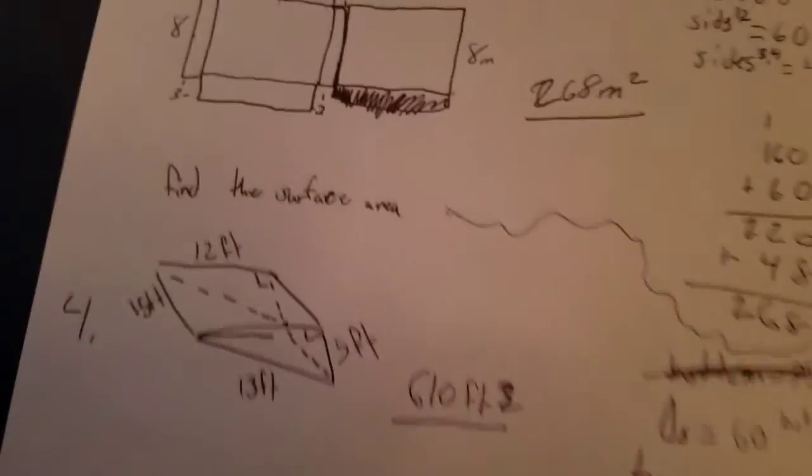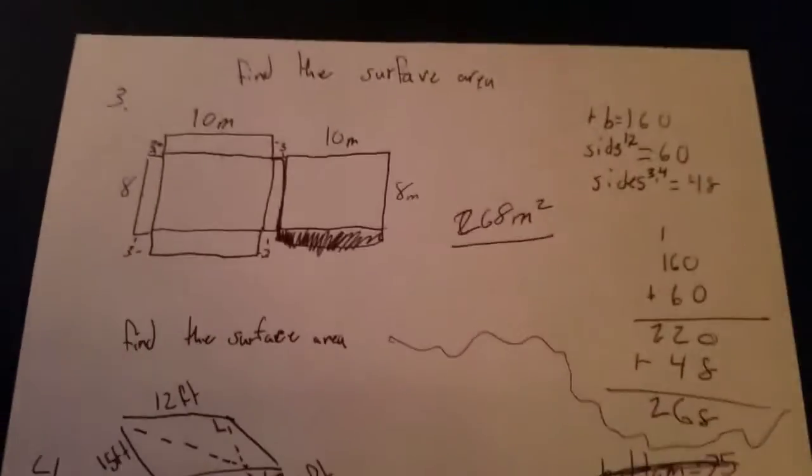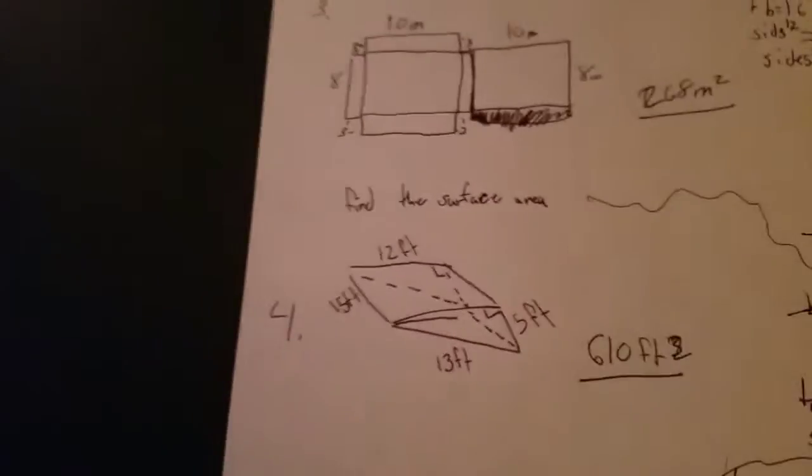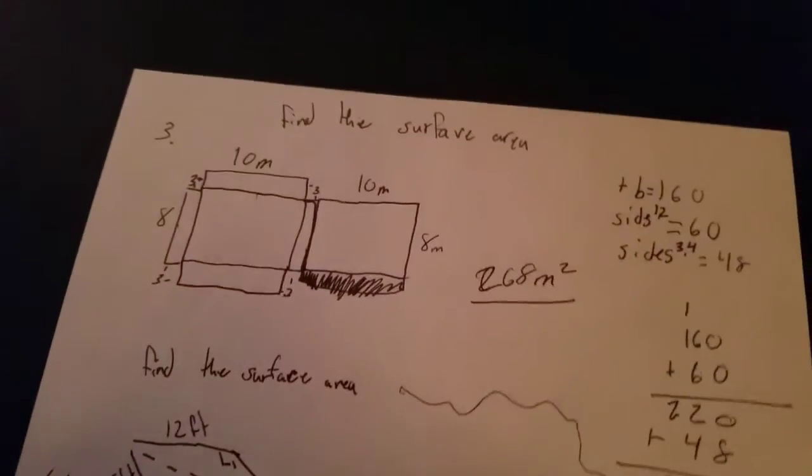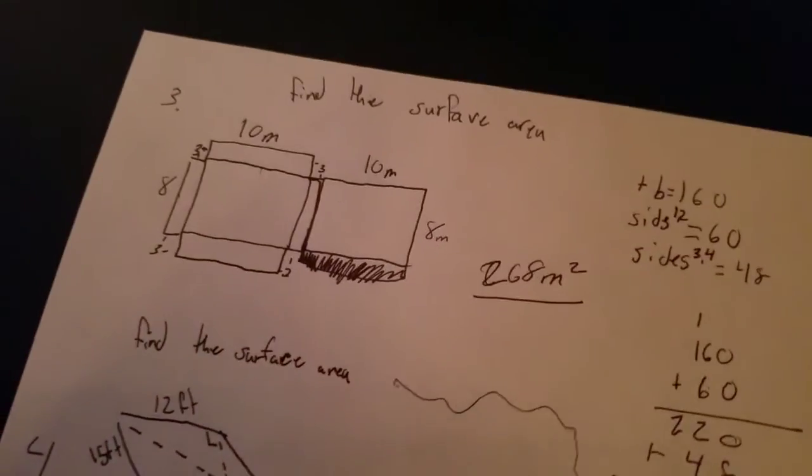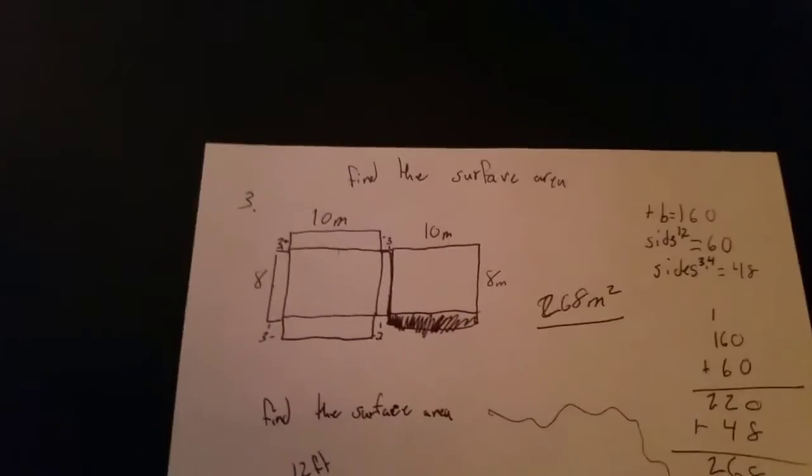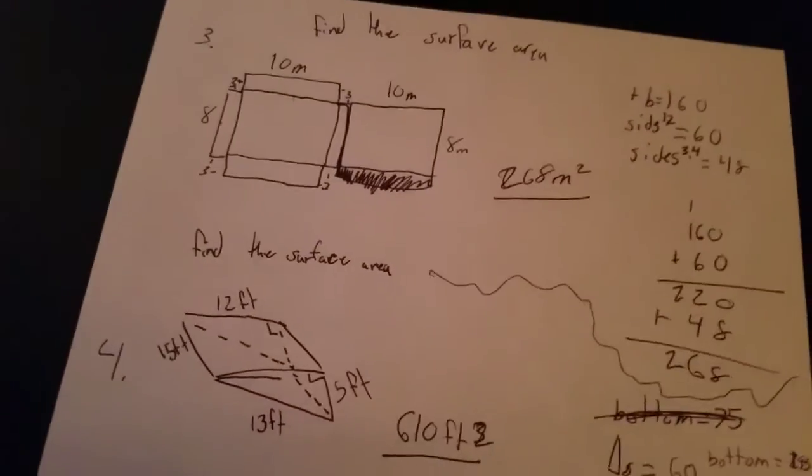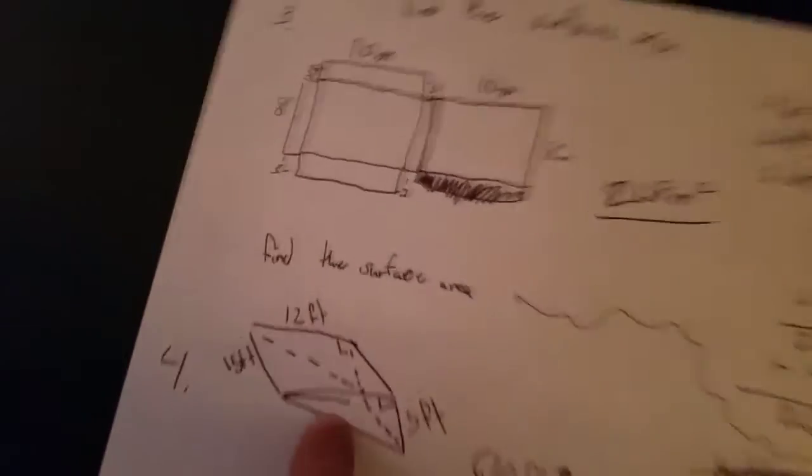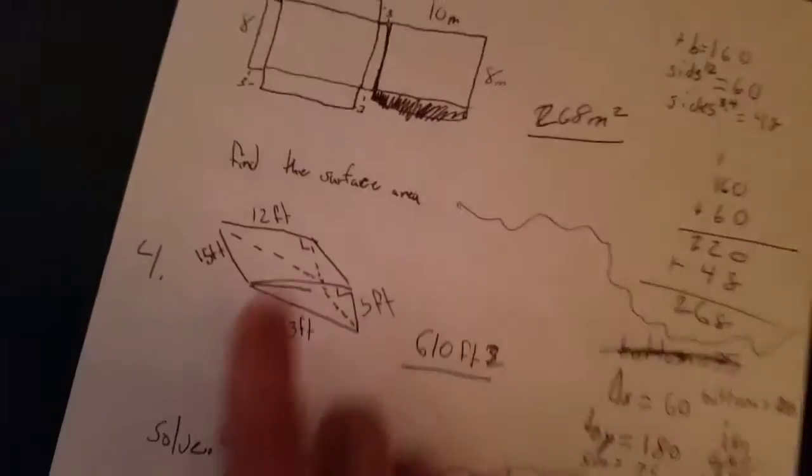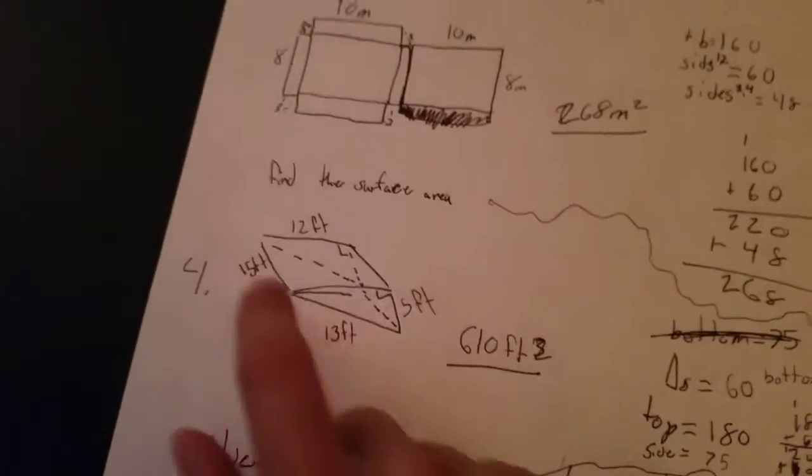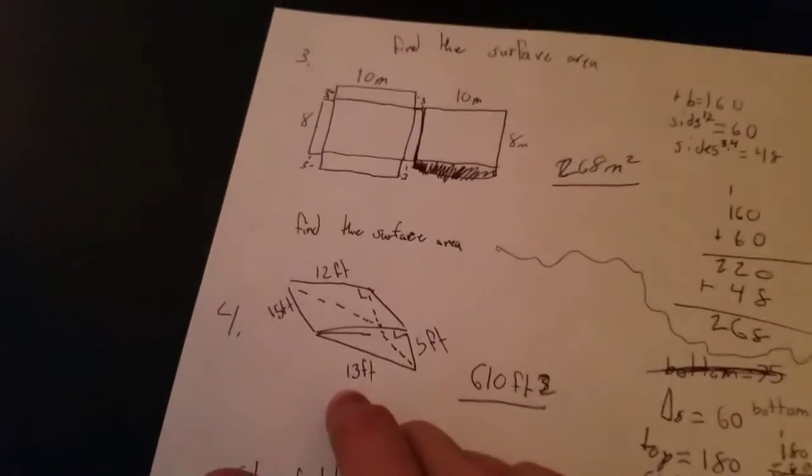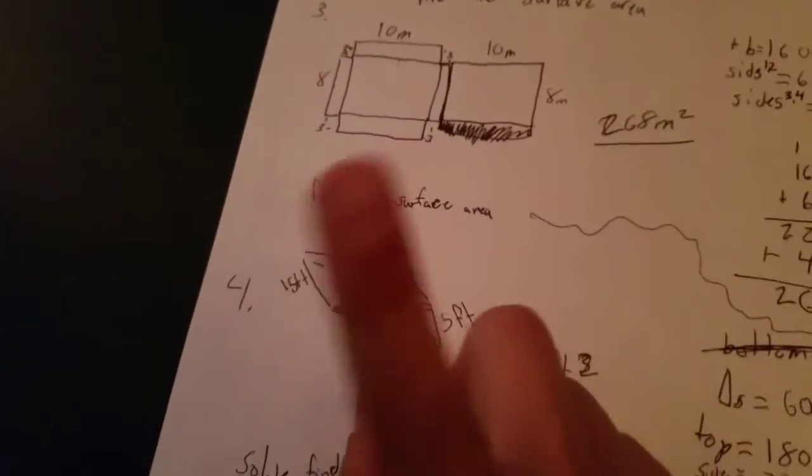And then the top would be 180 because we are multiplying 15 by 12. So 180. And then this side is 5 times 15 which equals 75. And then the bottom which is right here, it is 195 because you multiply 13 times 15. Now that is where the 13 comes in. And like I said, you only use it once.